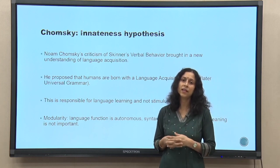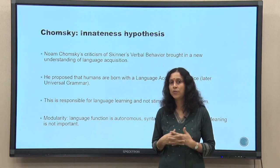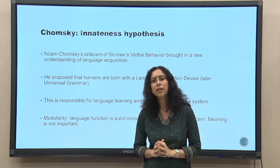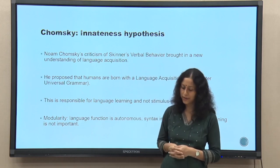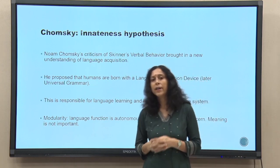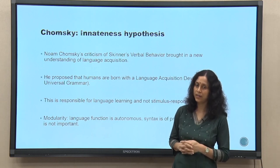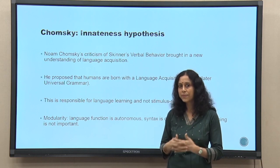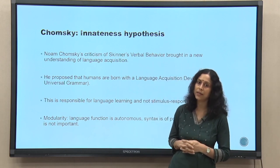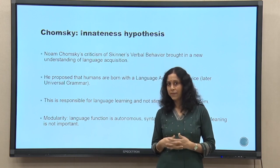Chomsky pointed out various such problems with Skinner's theory and brought in the idea that language capacity is innate. We cannot teach all of it; there are stimuli in the environment that are probably important, but not as important as the innate ability of the child. There is a universal grammar embedded in all our brains — a structure, an algorithm that makes us learn language, not somebody teaching us. This is the primary understanding of Chomsky's innateness hypothesis. What he called LAD initially, and later universal grammar, is responsible for language learning. He also made the important observation that language is modular in nature — that aspect of language in the brain is insulated from other mental functions.